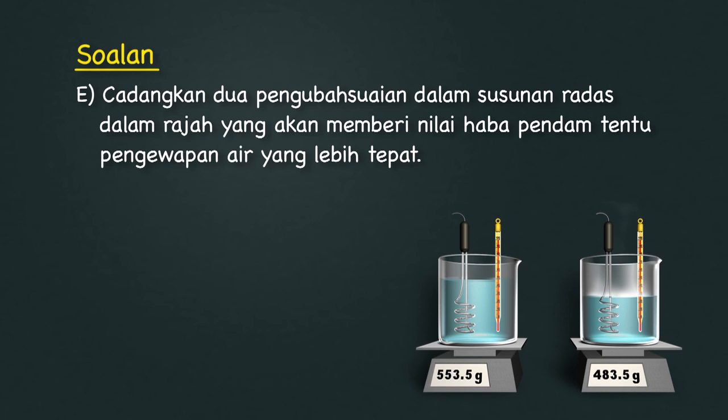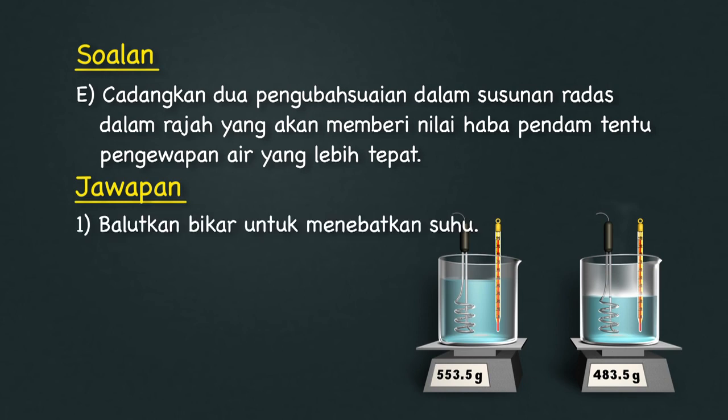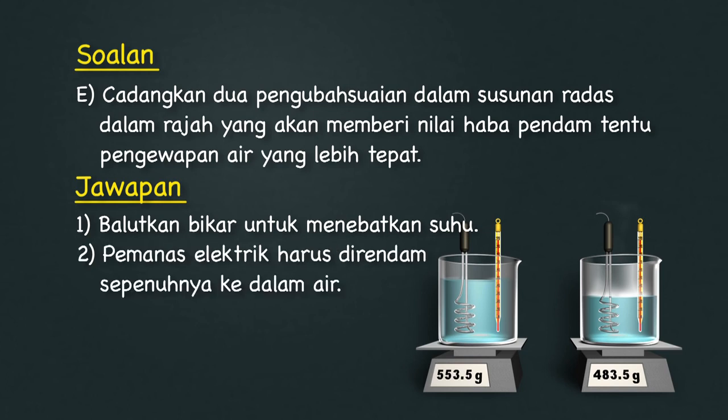Bahagian E: Cadangkan dua pengubahsuaian dalam susunan radas yang akan memberi nilai haba pendam tentu pengawapan air yang lebih tepat. Jawapan: 1) Balutkan bikar untuk menebatkan suhu. 2) Pemanas elektrik harus direndam sepenuhnya ke dalam air.